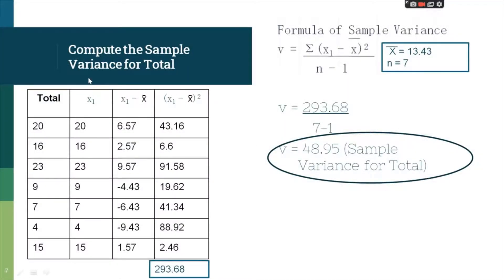You also need to get the variance for the total column. Copy the totals computed in the first step. The mean of the totals is 13.43, with n equal to 7. Subtract the mean from each total value to get the deviations, then square them — 6.57 squared is 43.16, and so on. The summation is 293.68. Substituting: 293.68 divided by 7 minus 1 gives a sample variance for the total of 48.95.